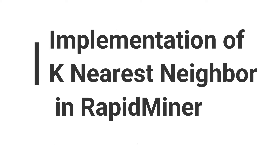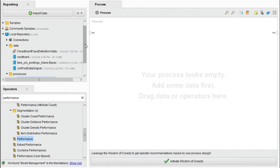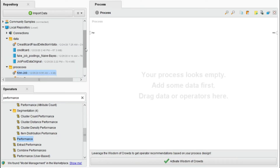Assalamualaikum, welcome to Nasirsoft. This is the fourth video of the tutorial series of RapidMiner. In this video we will work on a very important algorithm — KNN. In RapidMiner, applying the KNN (K-Nearest Neighbor) algorithm is very simple. The first step is that I have already imported the data on which I applied KNN.